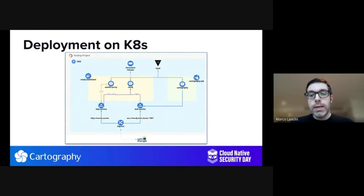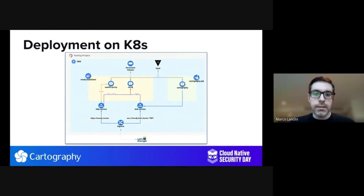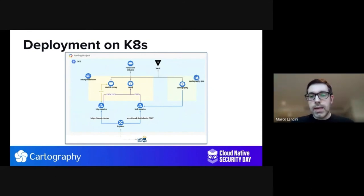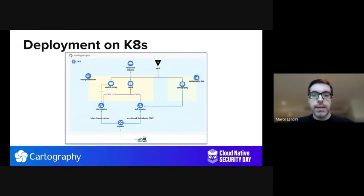We also integrated HashiCorp Vault with our GKE cluster to provide secrets to the running containers. For example, the Neo4j password is stored within Vault and retrieved at runtime. The Cartography setup is more simple — Cartography gets released as a Python package, so it is fairly straightforward to containerize it. We rely on a CronJob set to run daily, and we integrated with Vault so that Cartography can fetch credentials for both AWS and GCP at runtime.